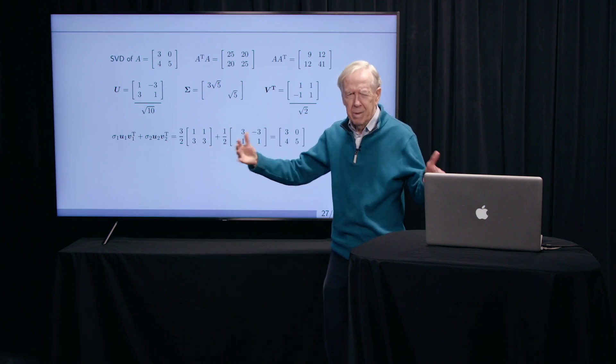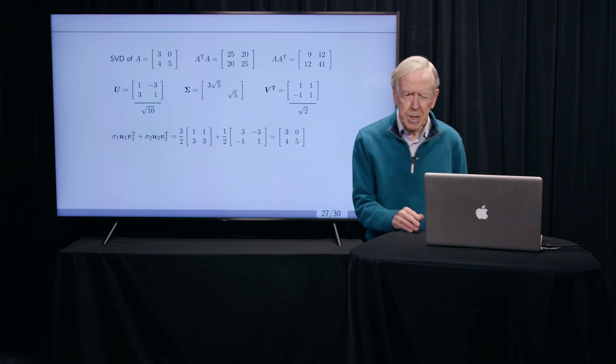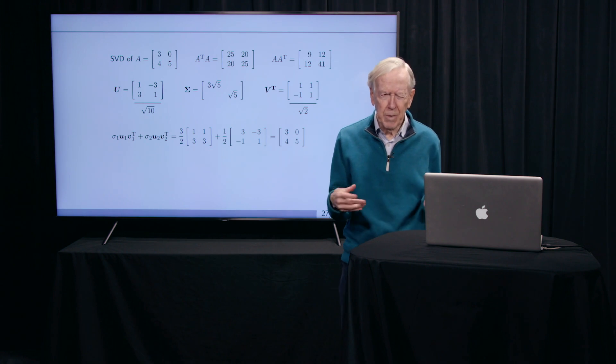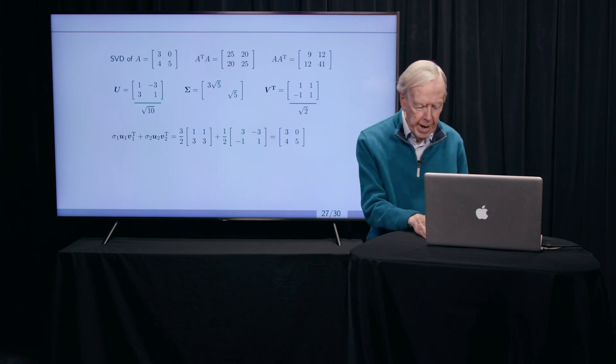And it's a mixture of a few features, but not all 1,000 features. Right. So this is singular value decomposition picks out the important part of a data matrix. And you cannot ask for more than that.